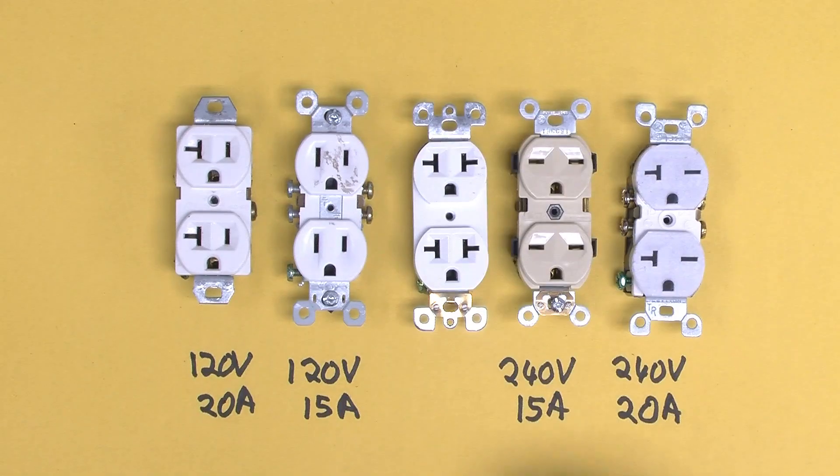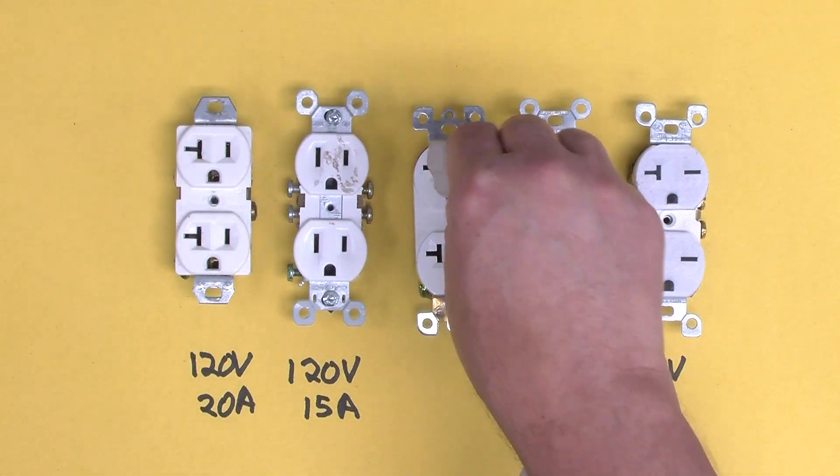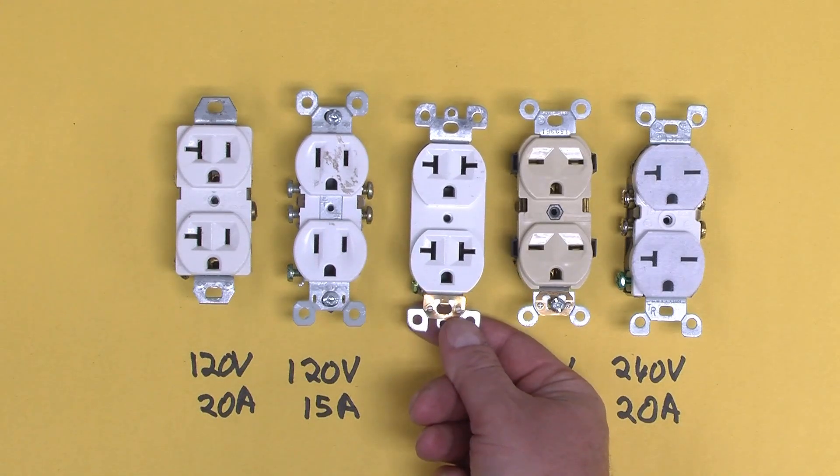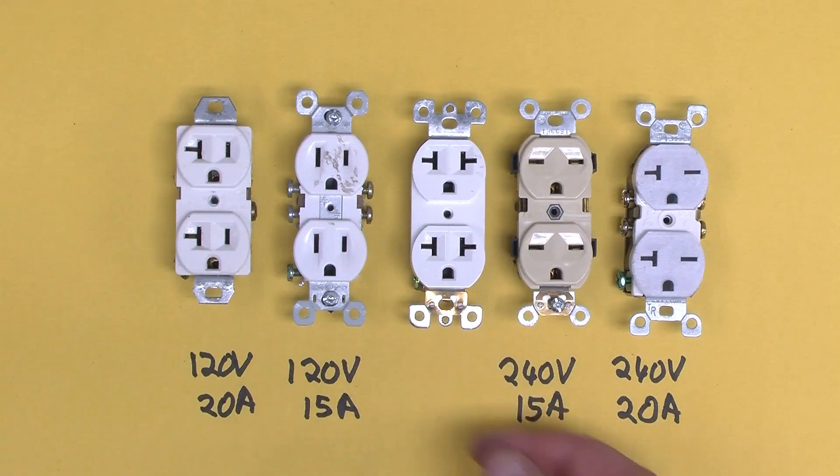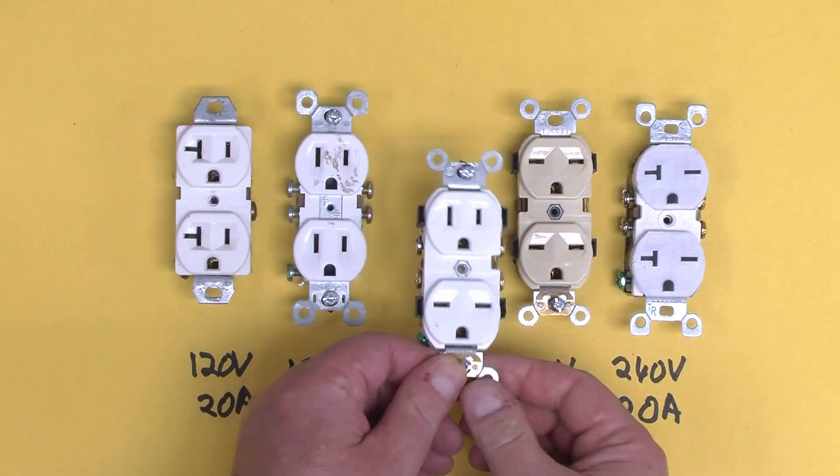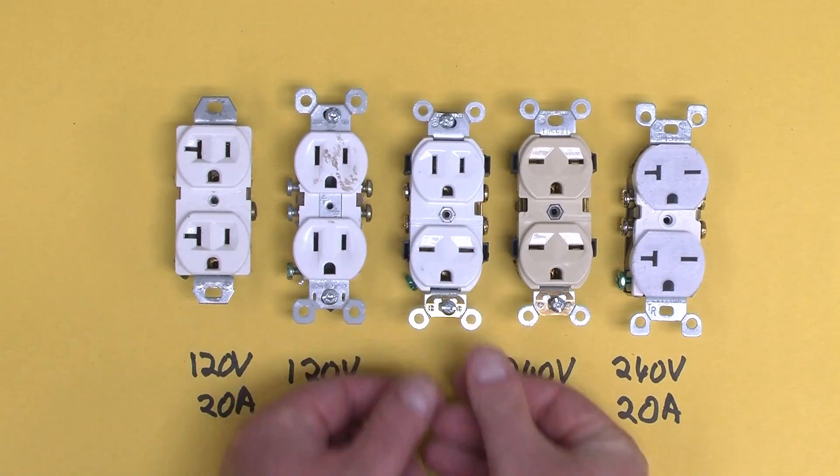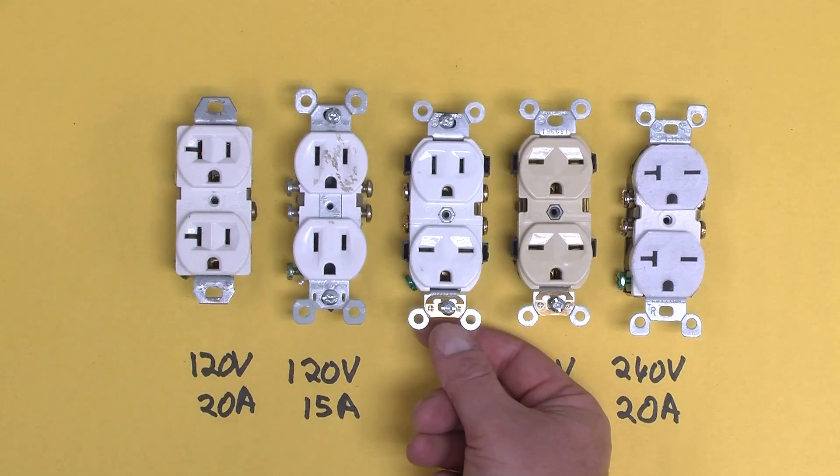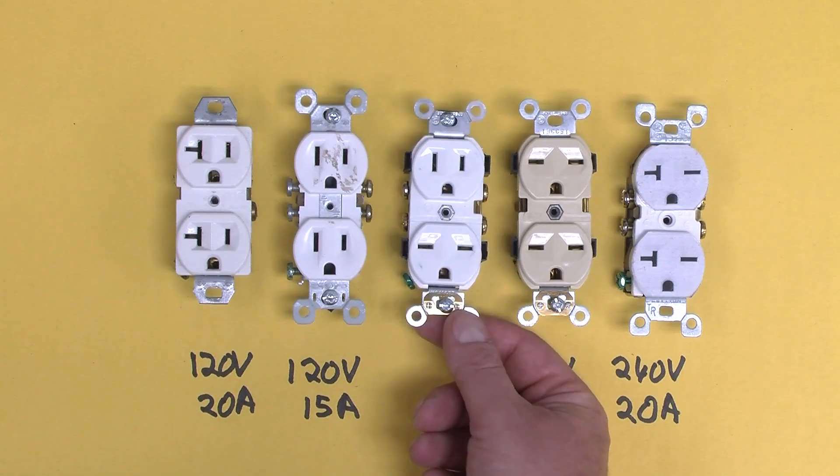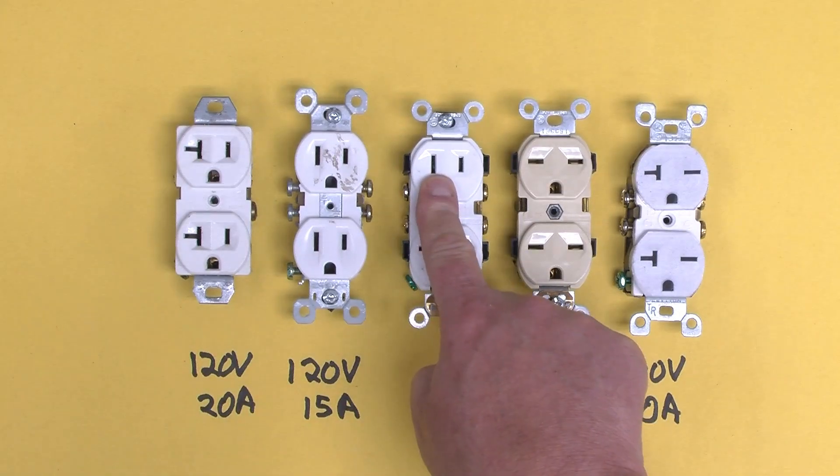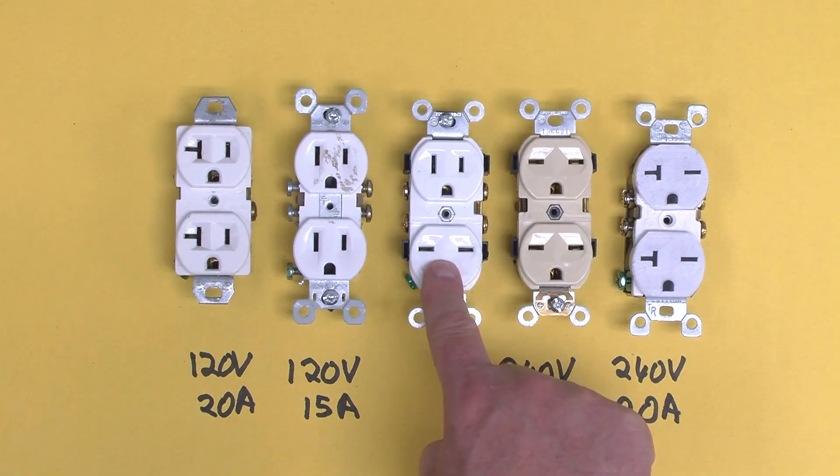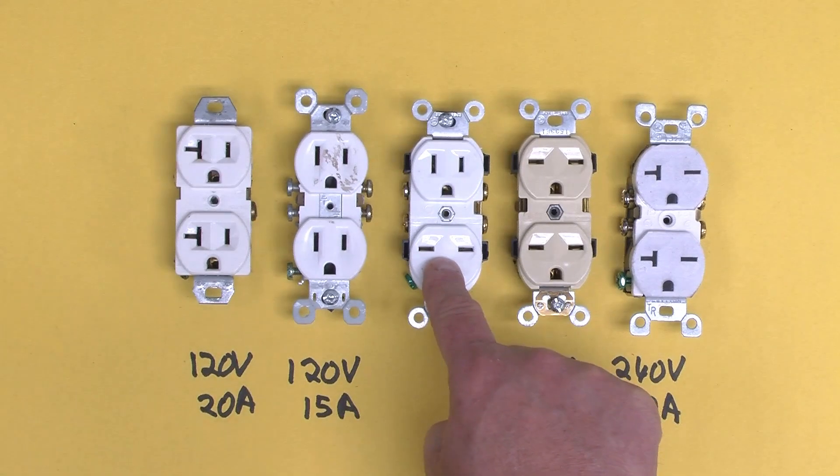If you do happen to need a receptacle that you could plug either in and get the right voltage, luckily there is one that does it, and that is this one, which is an official receptacle. It's made by Leviton, part number 5031, in this case W because it's white. It has a proper 120 volt receptacle up here and a proper 240 volt one down here.